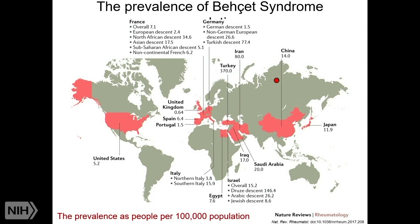If you look at European descent, in Germany it's 1.5, in France it's 2.4, in the United Kingdom it's 0.64, and in the United States it's 5.2 per 100,000.